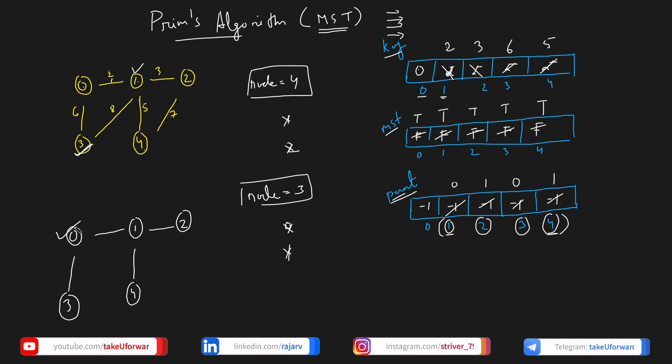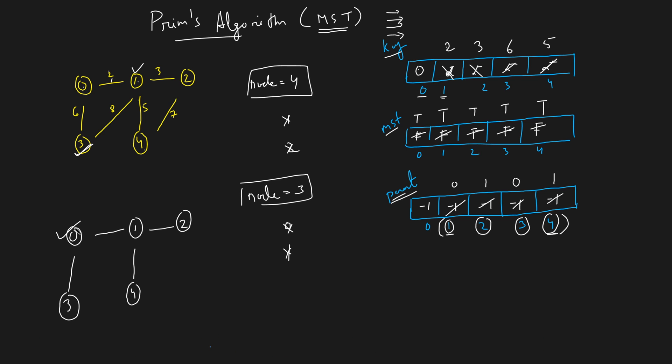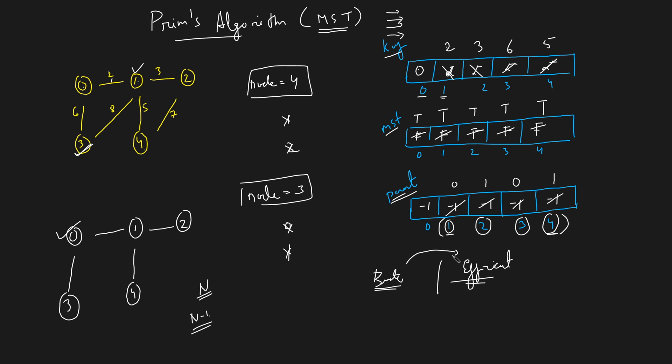The intuition of the algorithm is simple: start with a single node, pick edges with minimal weight to expand the tree, and keep going until you have n nodes and n−1 edges — then stop because you have your minimum spanning tree. In the next video we'll cover two implementations of Prim's algorithm: the brute implementation and the efficient implementation, in both C++ and Java, along with a discussion of time complexity.